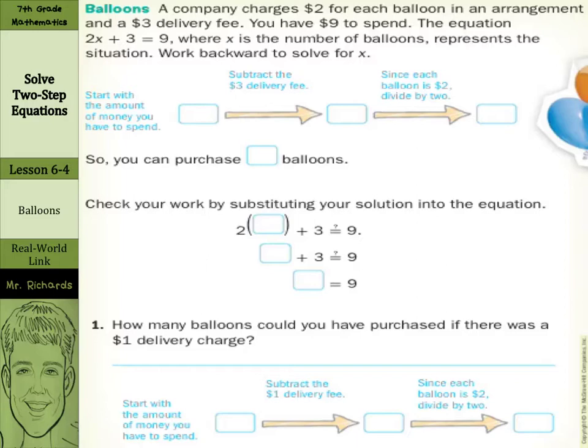Our real-world link is on balloons. A company charges $2 for each balloon in an arrangement and a $3 delivery fee. You have $9 to spend. The equation 2x plus 3 equals 9, where x is the number of balloons, represents the situation.